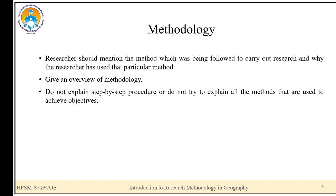In the methodology section — the third section of an abstract — the researcher should mention the method which was followed to carry out the research and why that particular method was used. Give an overview of the methodology. Do not explain a step-by-step procedure or try to explain all the methods used to achieve the objectives.